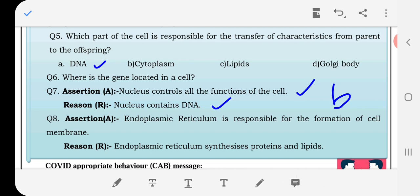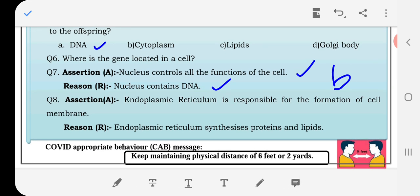Question number 8, assertion: endoplasmic reticulum is responsible for the formation of cell membrane. Reason: endoplasmic reticulum synthesizes proteins and lipids. The answer is D because the assertion is wrong. The correct answer is that endoplasmic reticulum synthesizes proteins and lipids.